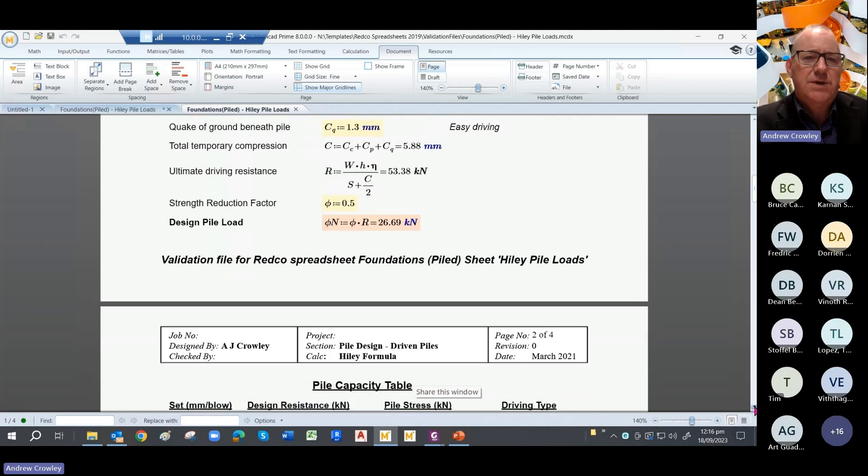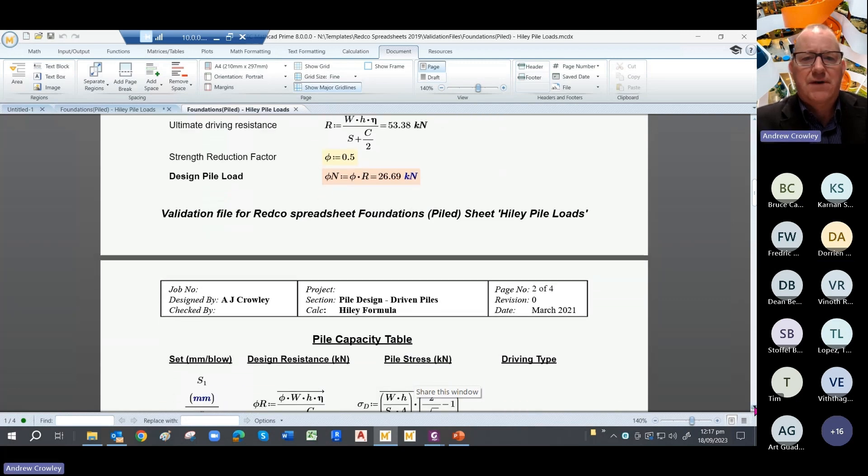And that gives you the ultimate driving resistance using the Hiley formula as 58.38 kilonewtons. We have a strength reduction factor of 0.5, or a factor of safety of 2, so our design load on that pile is 26 kilonewtons. So not a lot, but there it is.